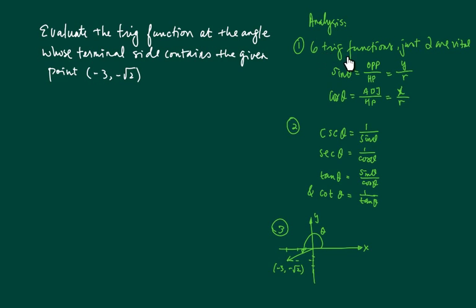All right, so analysis goes something like this. Of the six trig functions, two are really what's vital: sine and cosine. The rest of the four is an extension of those two. Sine is defined by opposite over hypotenuse or y value over the r value. So here's the y value over the r value over here for our problem. And cosine is defined by x over r, so x value is over here and r is over here.